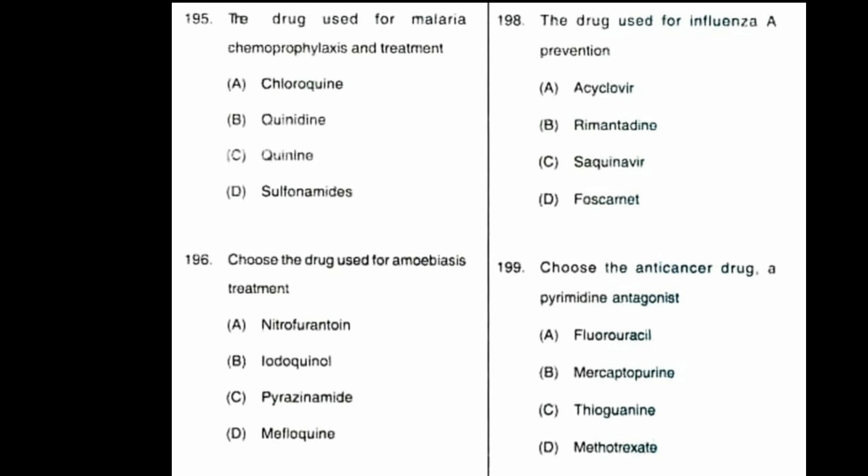Question number 198: the drug used for influenza A prevention is? Option A: acyclovir, B: rimantadine, C: saquinavir, D: foscarnet. Option B, rimantadine, is the correct answer.